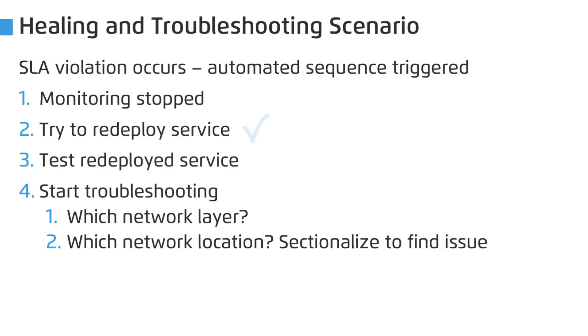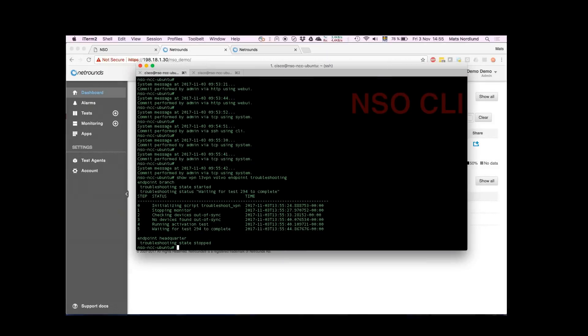NSO then runs a black box activation test to gather further information for the network engineer. Then a white box troubleshooting test is run to find where in the network, in which network layer, and which critical KPI is experiencing the issue.